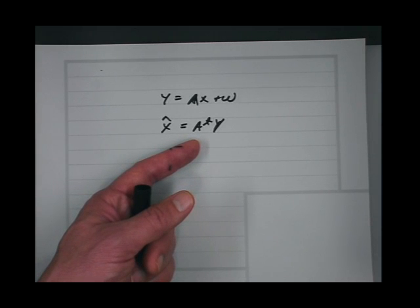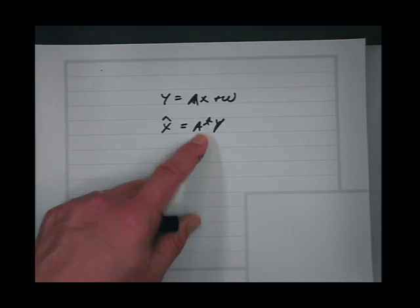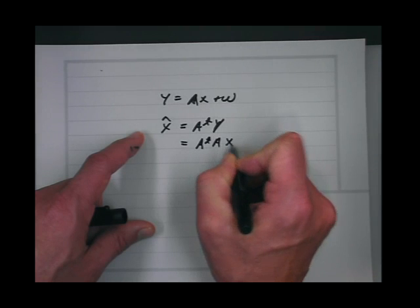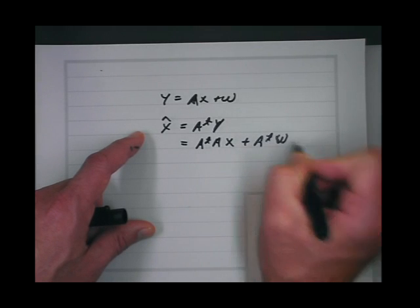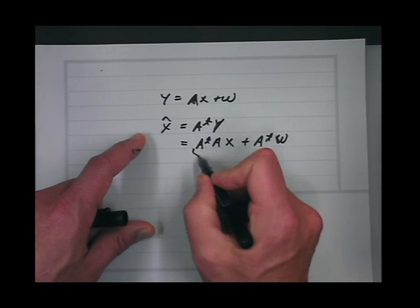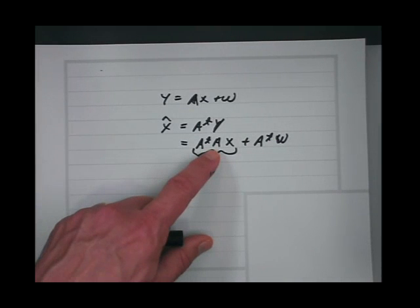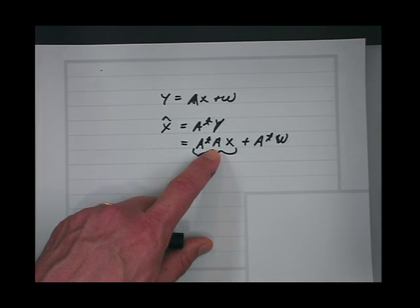It's bizarre. The result is going to be A-transpose A x plus A-transpose w. This thing is only equal to x if A is orthonormal.